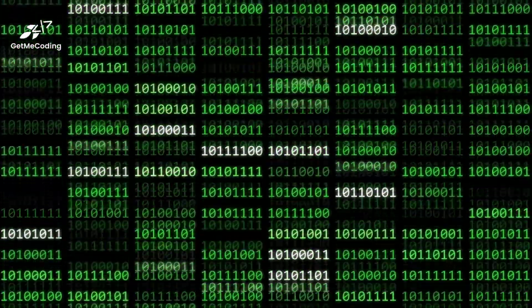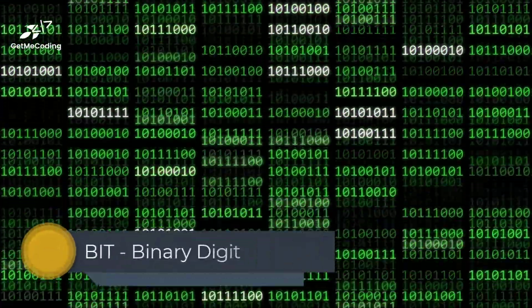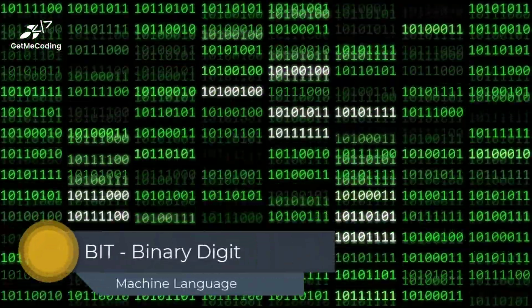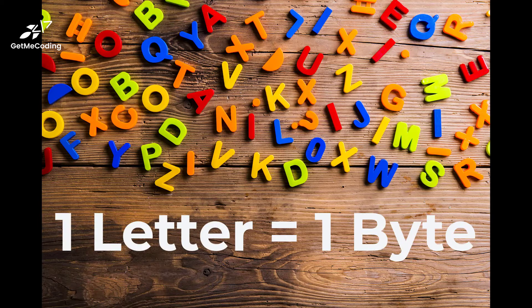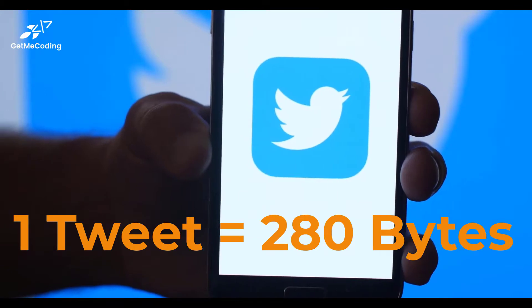The binary digit, also known as the bit, which is either a zero or a one. But if we were to take eight of those bits, it would equate to one byte.